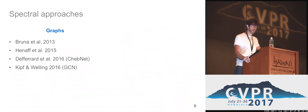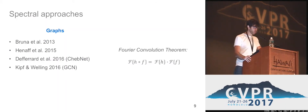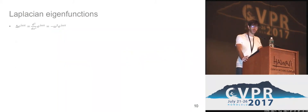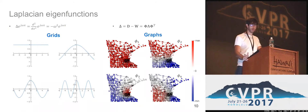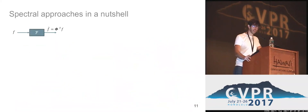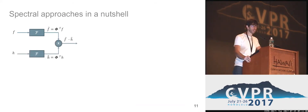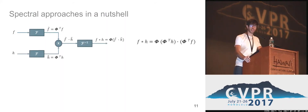The first family of solutions for generalizing convolution is represented by spectral approaches. The main idea is to generalize the Fourier convolution theorem to graph and manifold structured data, realizing convolution not in the spatial domain but in the spectral one. Observing that complex exponentials correspond to eigenfunctions of the Laplace operator on Euclidean domains, previous works considered the eigenfunctions of the graph Laplacian as a generalized Fourier basis. One can define a graph convolution by projecting a signal over these eigenfunctions, realizing a graph Fourier transform, multiplying the spectrum by some spectral coefficients, and projecting back to the original domain.